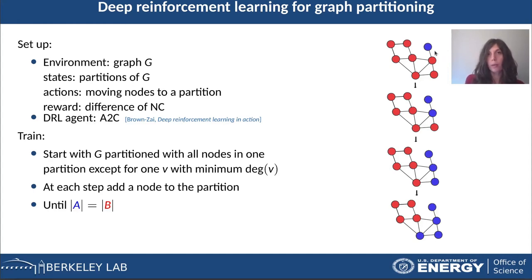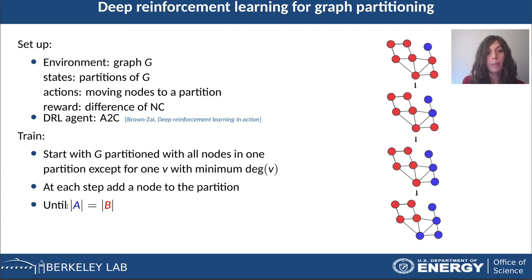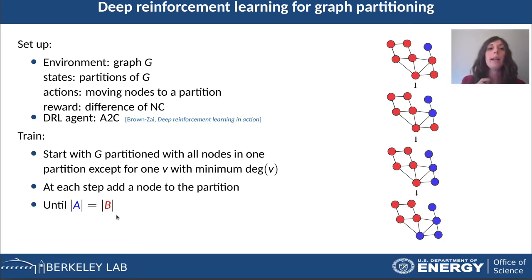At each step of the deep reinforcement learning loop, the agent — the deep neural network — outputs a probability for each node. We select a node according to these probabilities and add it to the blue partition. We continue this loop until the two partitions have the same cardinality, which is a good stopping condition because it is related to the two partitions having the same volume. Since the reward is the difference of the normalized cut before and after moving the node, the agent learns to choose nodes that minimize the normalized cut at each step.